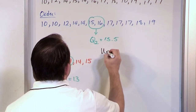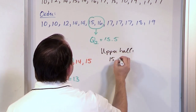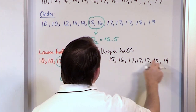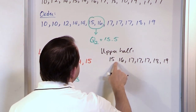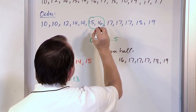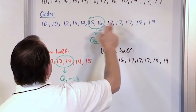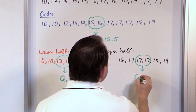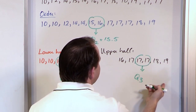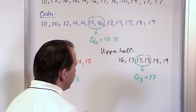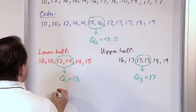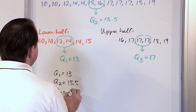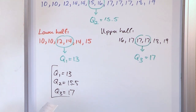Now finally for the upper half, we have 16, 17, 17, 18, 19 — actually let me correct that. We don't include 15 in the upper half; we include 16 because this is half of the data set, six values. That's the upper half of the data set. We look and see the two 17s are right in the middle. So the upper quartile Q3 is going to be the average value of those two numbers. When you average the same number together, you just get 17. So ultimately, Q1 is 13, Q2 is 15.5, and Q3 is 17. These are the final answers.